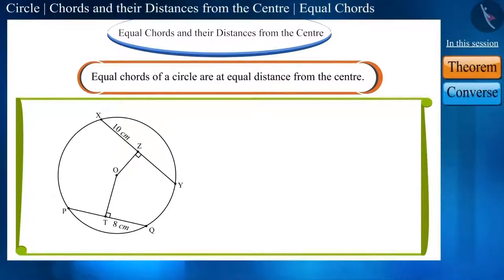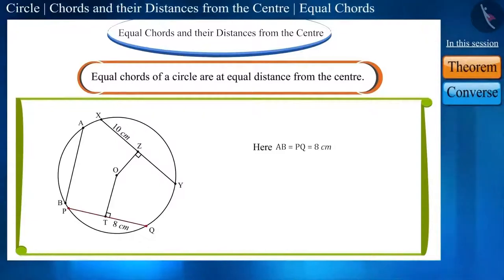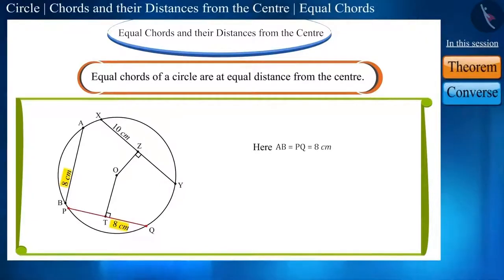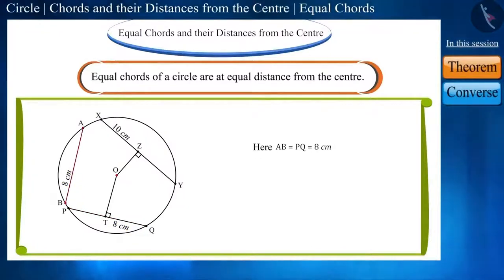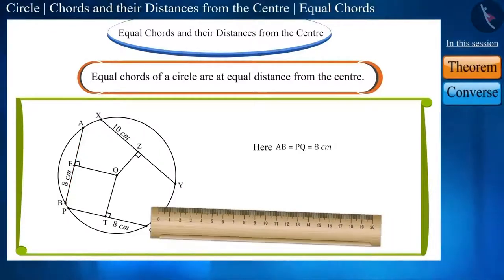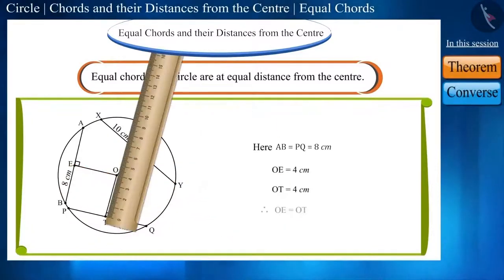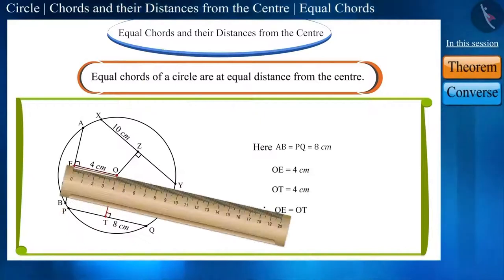To understand it better, let's draw another chord AB in this circle, whose length is equal to PQ, i.e. 8 cm. Draw a perpendicular OE from the center O to chord AB. Find the length of OE with the help of a scale. You can see that the length of OT and OE is equal.